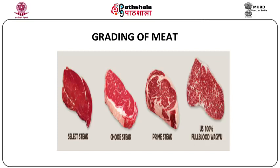This is a steak. You can see it in the different grades: the select steak, the choice steak and the prime steak. The last picture is the full blood Wagyu. Wagyu in Japan means a cow — it is the Japanese beef cattle. One interesting aspect of this full blood Wagyu beef is that this species of cow is not crossbred with other animals, and it has a distinct layer of marbling which gives this meat its unique tenderness and juiciness.